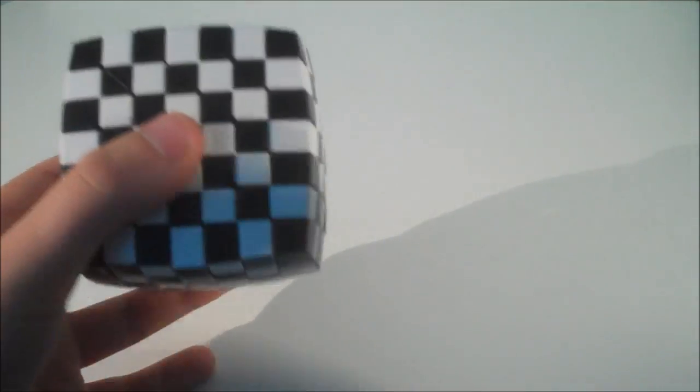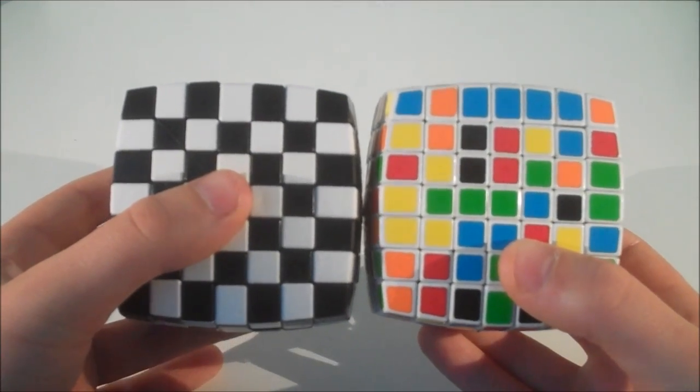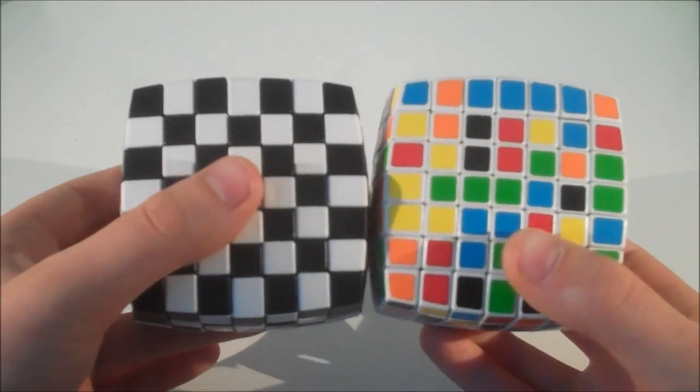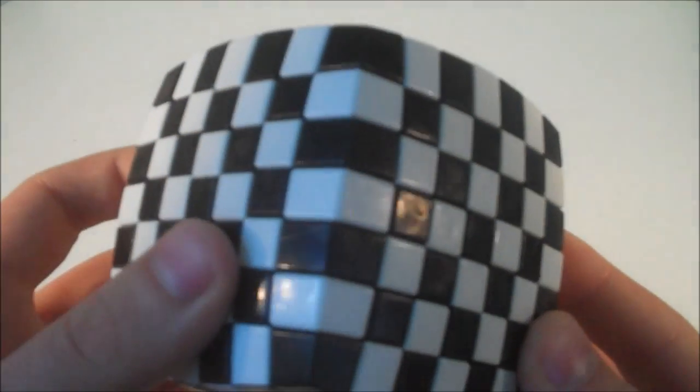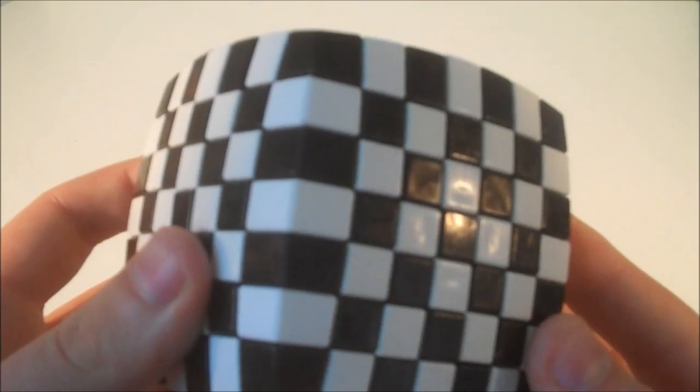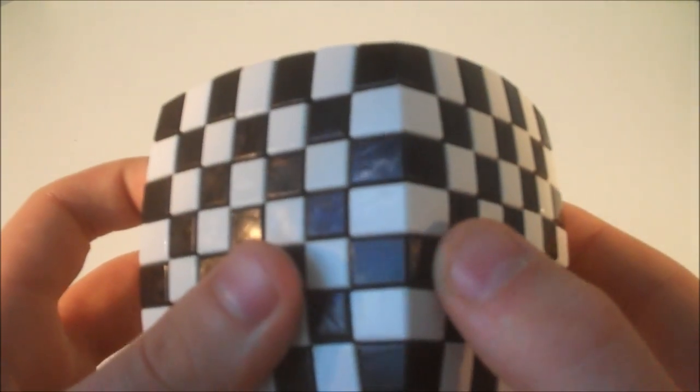As compared to my normal V Cube 7, of course they are exactly the same size. Close up on the plastic. You can kind of catch it in the light but you can kind of see marks on it here.